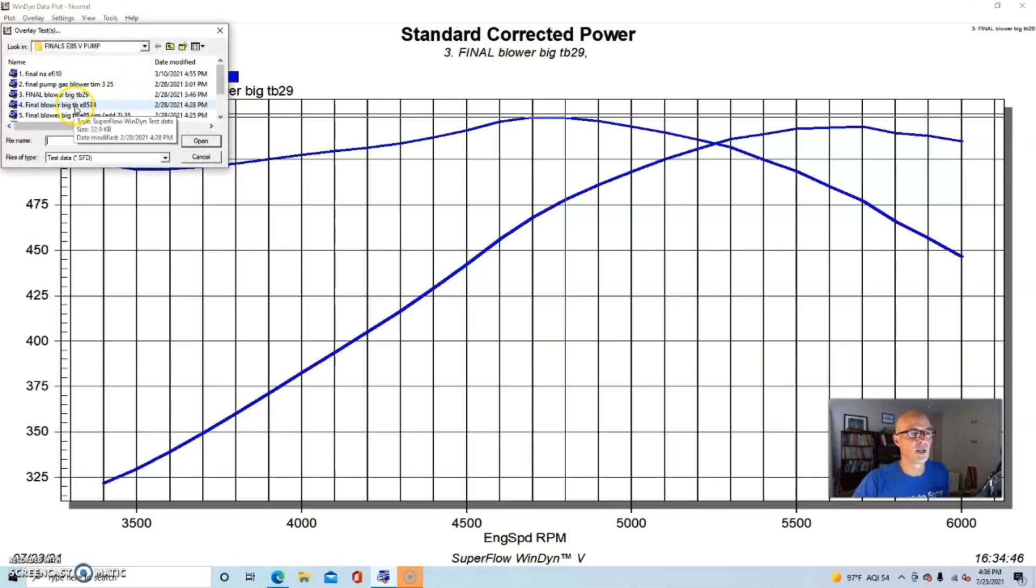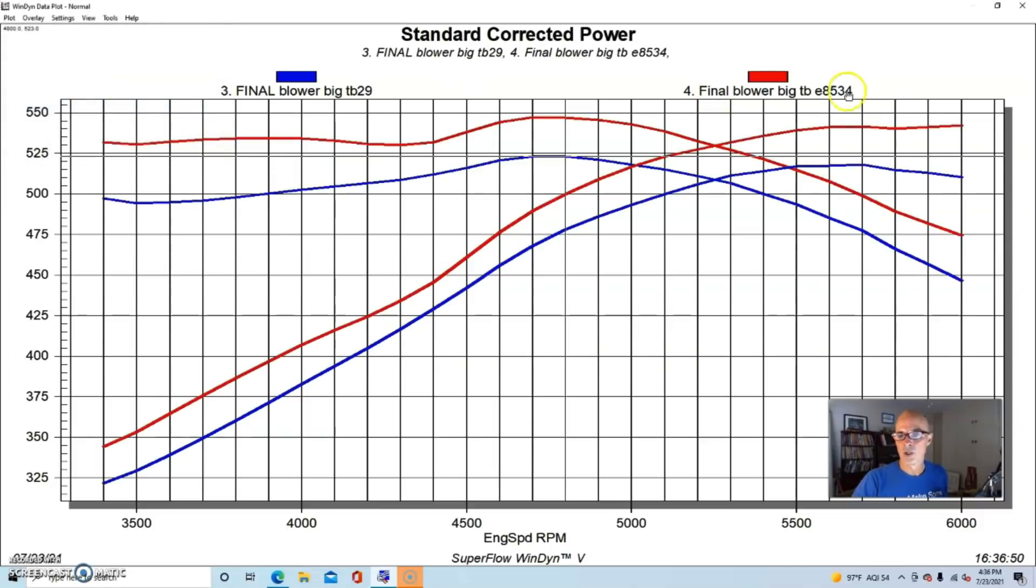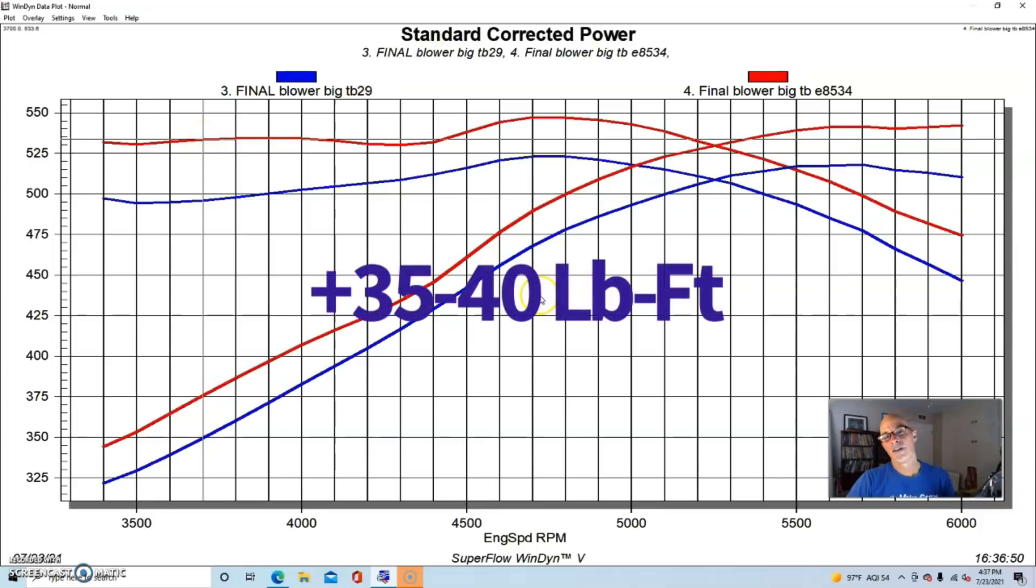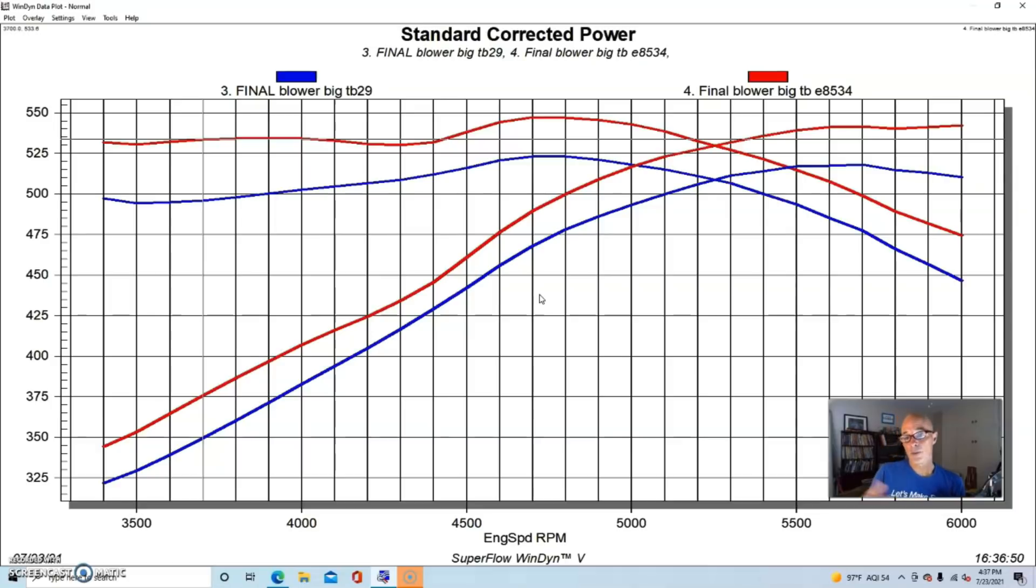Just adding the E85 picked up power everywhere. Peak power was 542 horsepower, peak torque was 547 foot-pounds of torque. You can see in some places we picked up as much as 35 or 40 foot-pounds of torque, so it was a big gain.